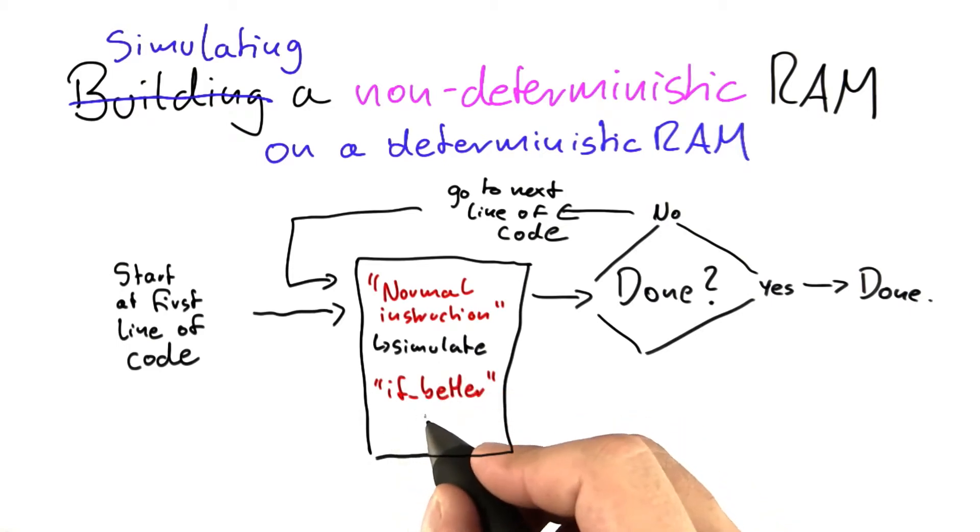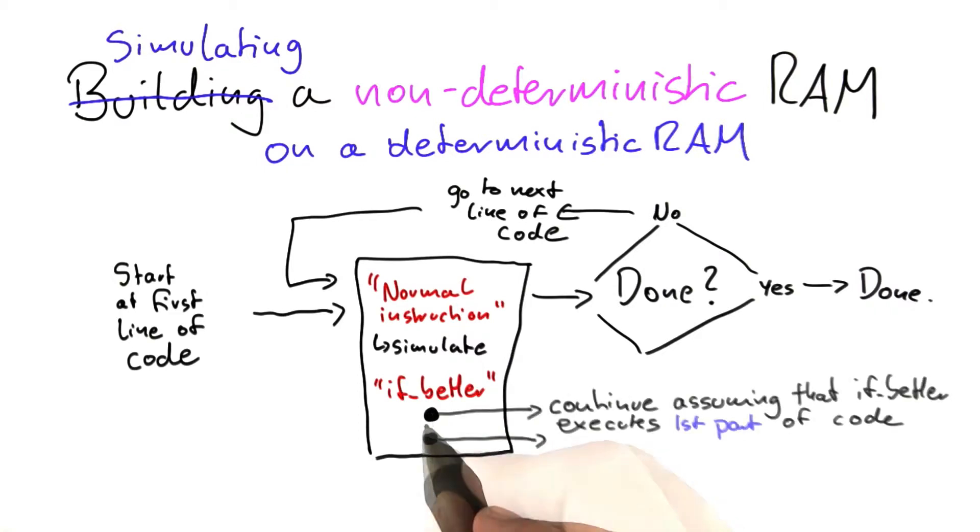So what our simulator will then do is it will branch into two different possibilities. So it will start two new simulations. In one simulation, it will continue assuming that the if better function executes the first part of the code. So the one that came directly after the if better.